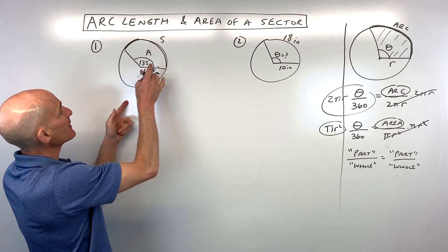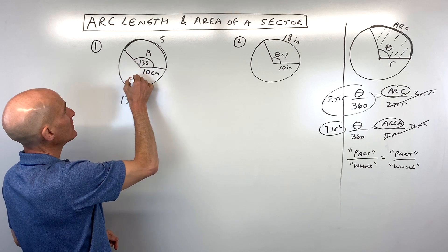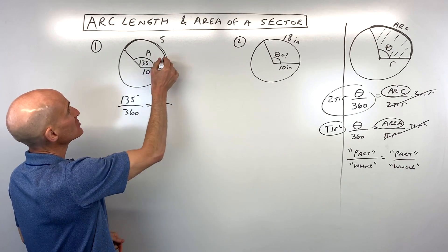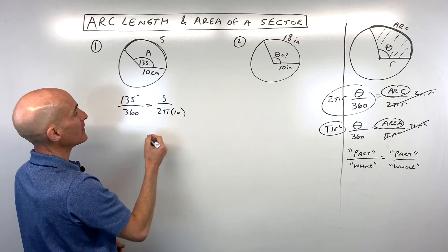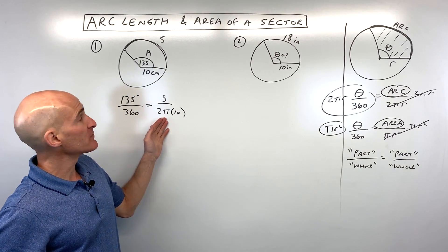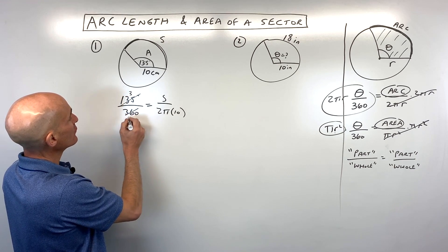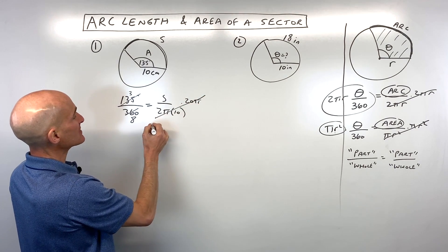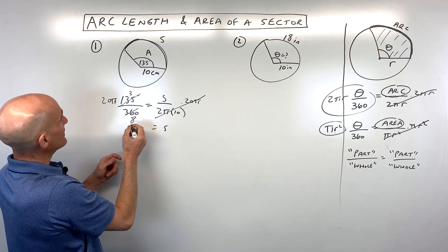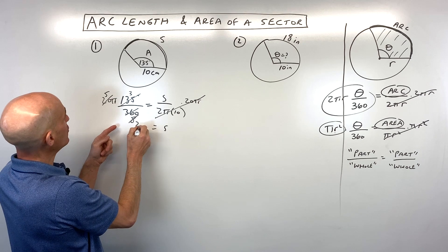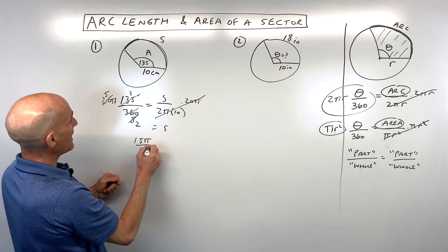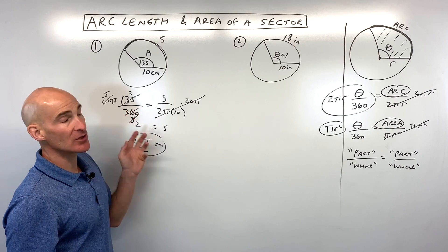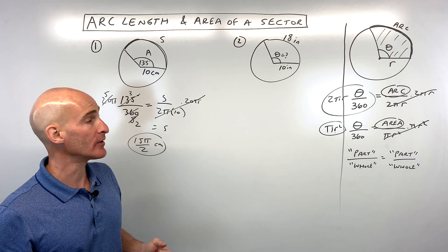Let's do the arc length first. We've got 135 is to 360 as arc length s is to the entire circumference, which is 2πr where r is 10. We can reduce: 45 goes into 135 three times and 45 goes into 360 eight times. Multiplying both sides by 20π to get s by itself, then reducing further — 4 goes into 20 five times and 4 goes into 8 twice — this comes out to 15π over 2 centimeters. That's your arc length. You could also use 3.14 for π and cross multiply to get a decimal, but this is an exact value.